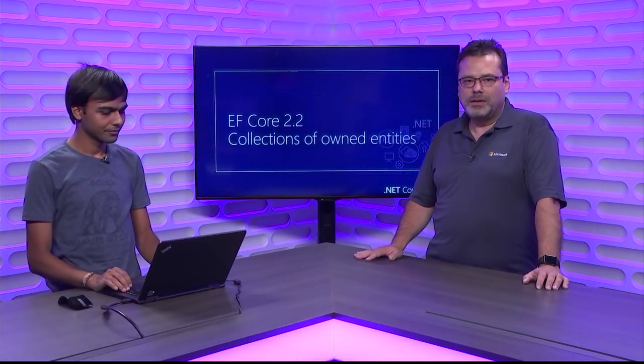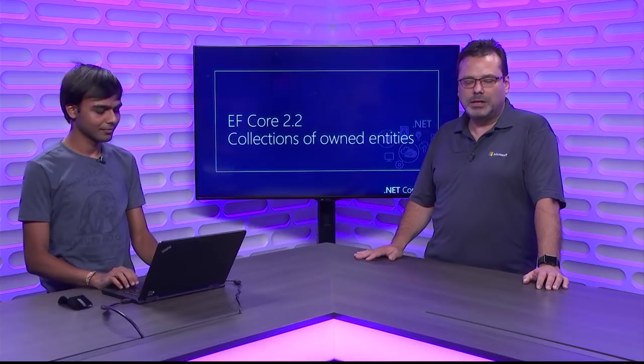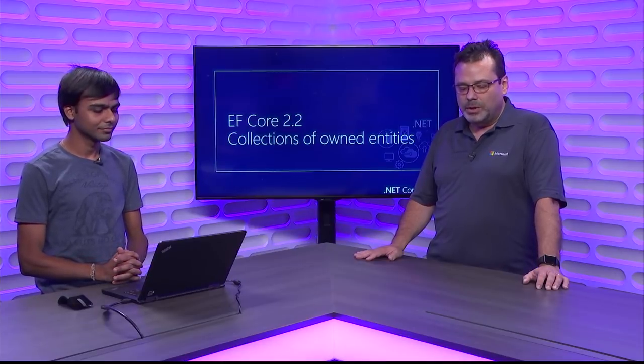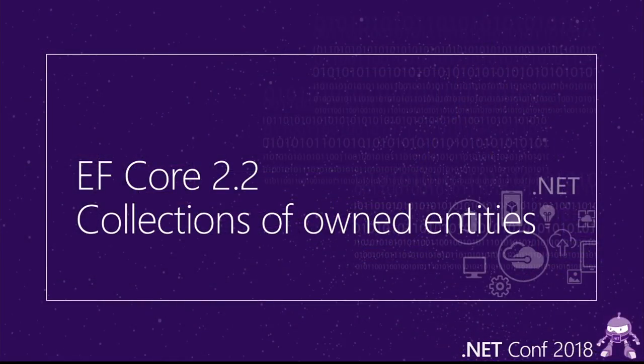Our first demo is about collections of owned types. The idea with owned types or owned entities is that you can represent in the EF model a stronger relationship than just a normal relationship in a database. You can say this entity — the canonical example is address — is owned by a customer. That means you cannot have the address exist independently of the customer. When you want to manipulate data on the address, you need to actually load the customer and go through the customer to do anything.